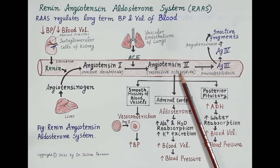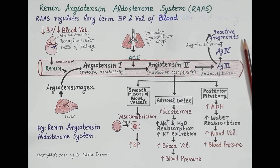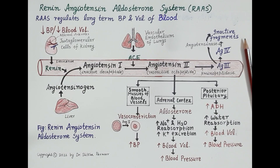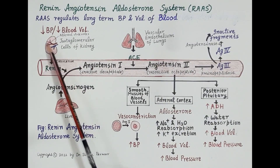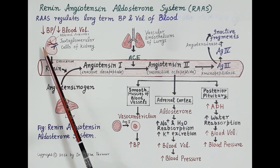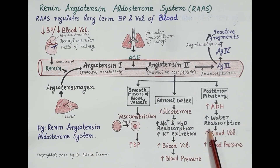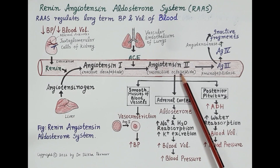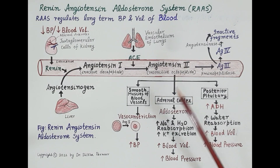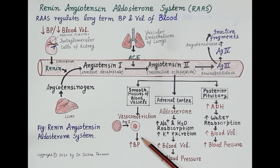This is how Angiotensin 2 is metabolized — converted into inactive fragments. To summarize: a fall in blood volume or blood pressure stimulates RAS, increasing both blood pressure and blood volume. Importantly, overactive or abnormal activation of RAS increases blood pressure to an extent that it causes hypertension. Therefore, RAS is a frequent target of antihypertensive drugs.